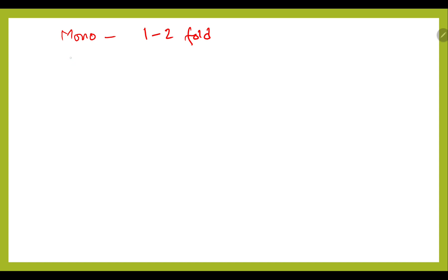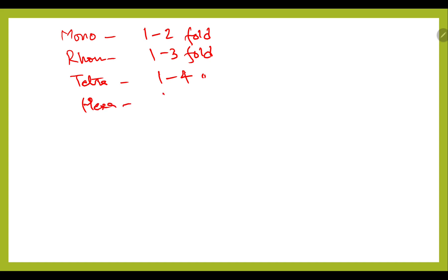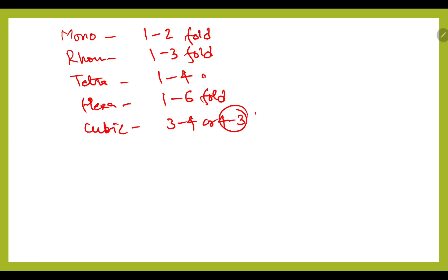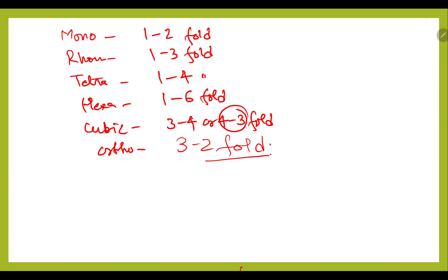In the case of monoclinic, the symmetry associated is one two-fold. Rhombohedral has one three-fold. Tetragonal has one four-fold. Hexagonal has one six-fold. Cubic has three four-fold or four three-fold — both are possible — this is the most common. In orthorhombic, we have three two-fold symmetry.